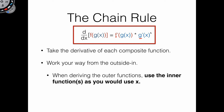So if you had f of g of h of x, then you take the derivative of f of g of h, then g of h, then h. You work your way from the outside in — starting at your outermost function, then moving into g, then into h. That's how you'd actually do it.